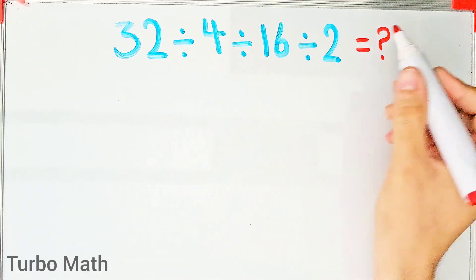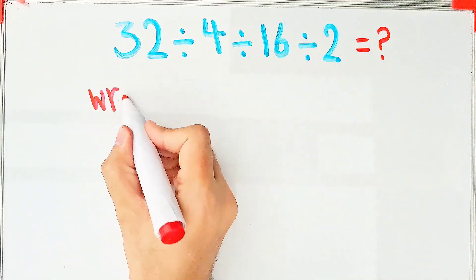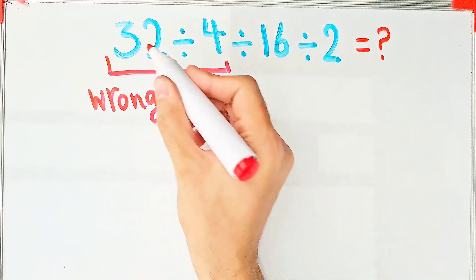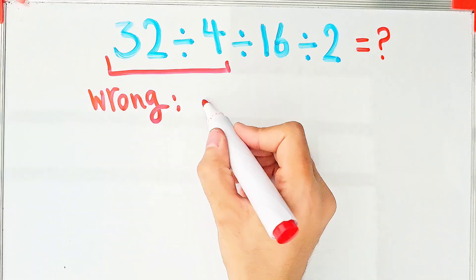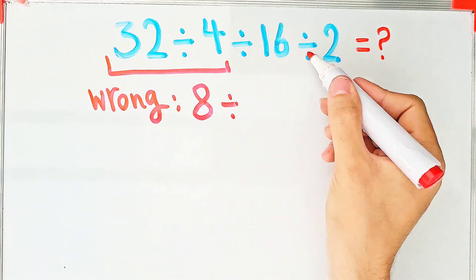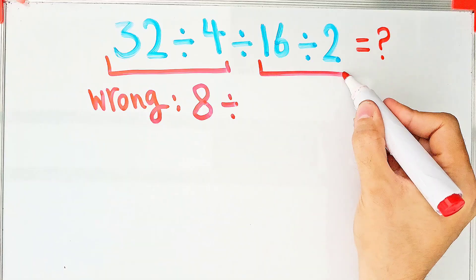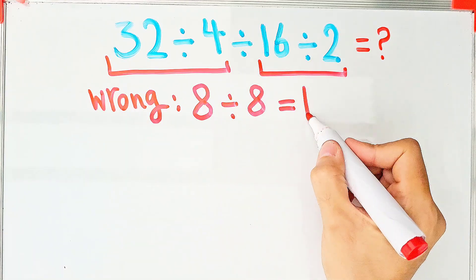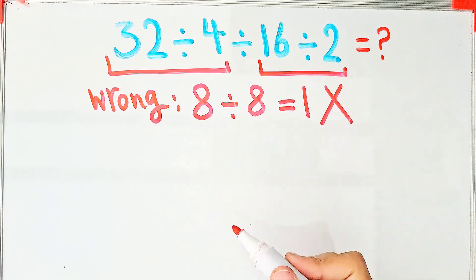In the wrong way of solving this question, some people start from the left and first do this division: 32 divided by 4 equals 8. After that, they do this division, 16 divided by 2, that equals 8. And they say the final answer of this question equals 1. But this answer is wrong.